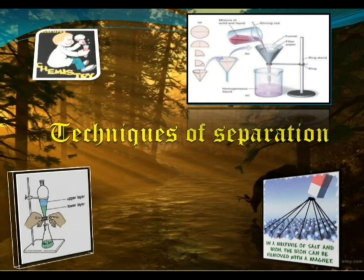We require just one or two separate constituents of a mixture for our use. It's not necessary that we require a whole mixture. So we have to separate various mixtures into their individual constituents to make them useful in our daily life.